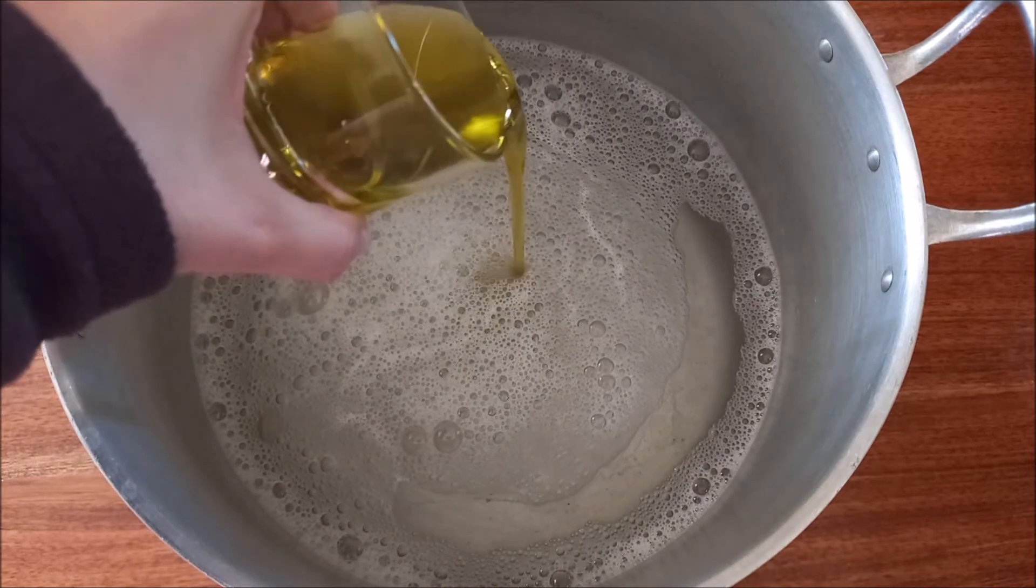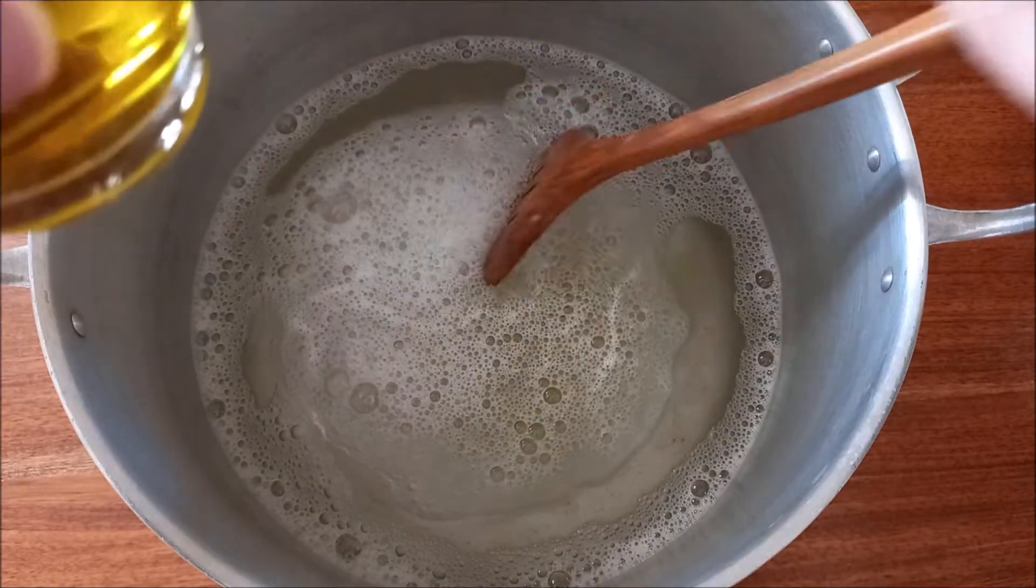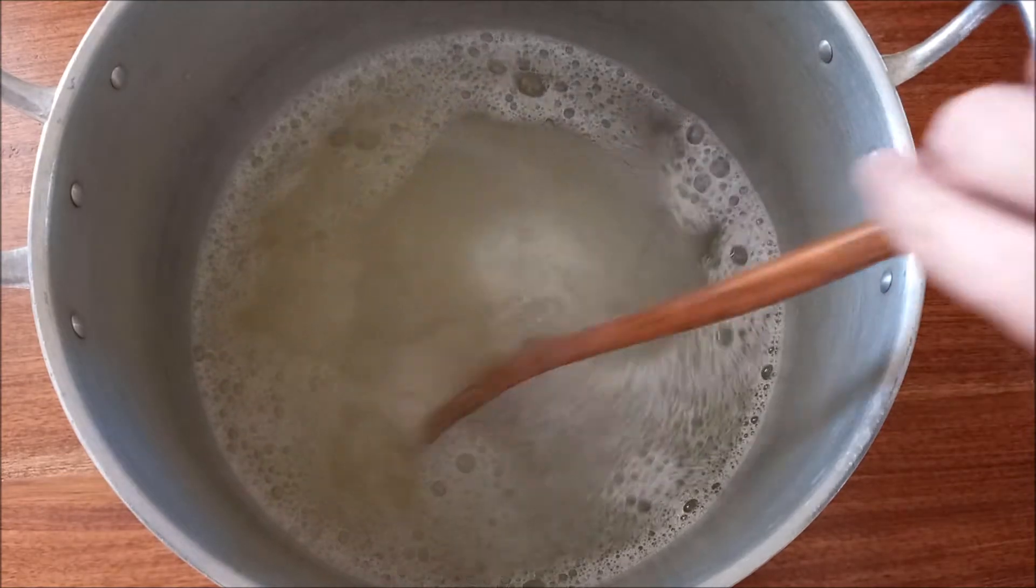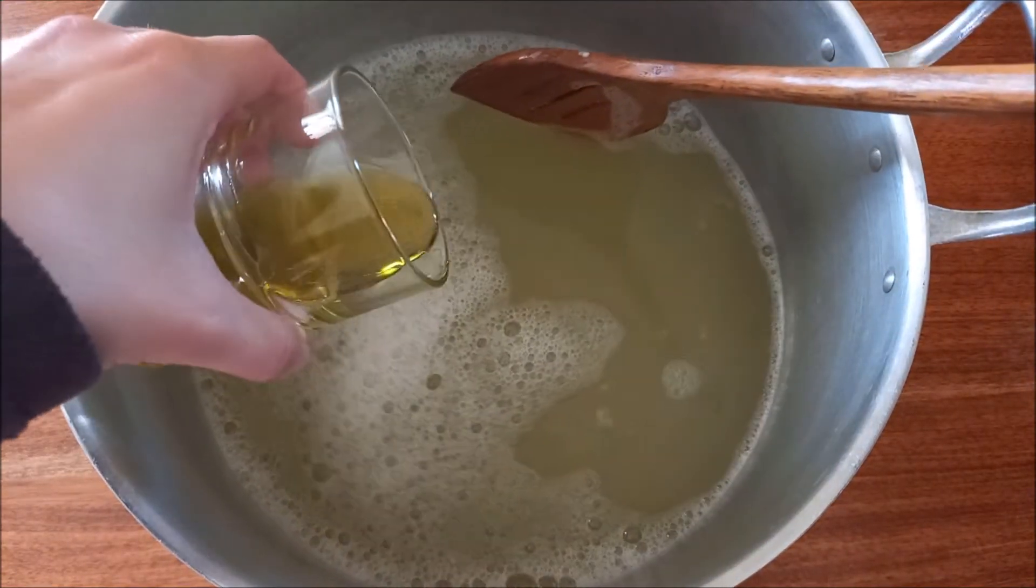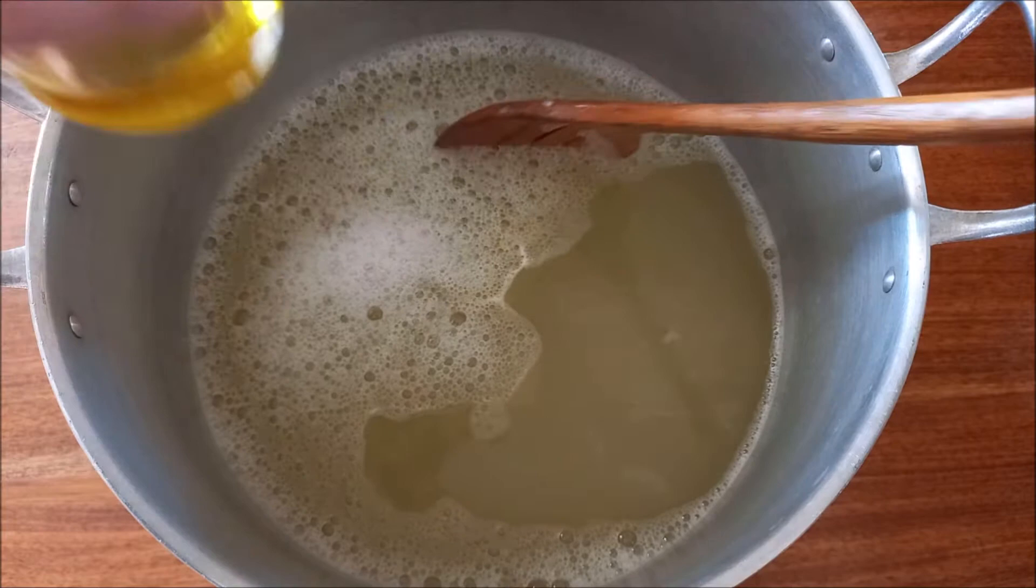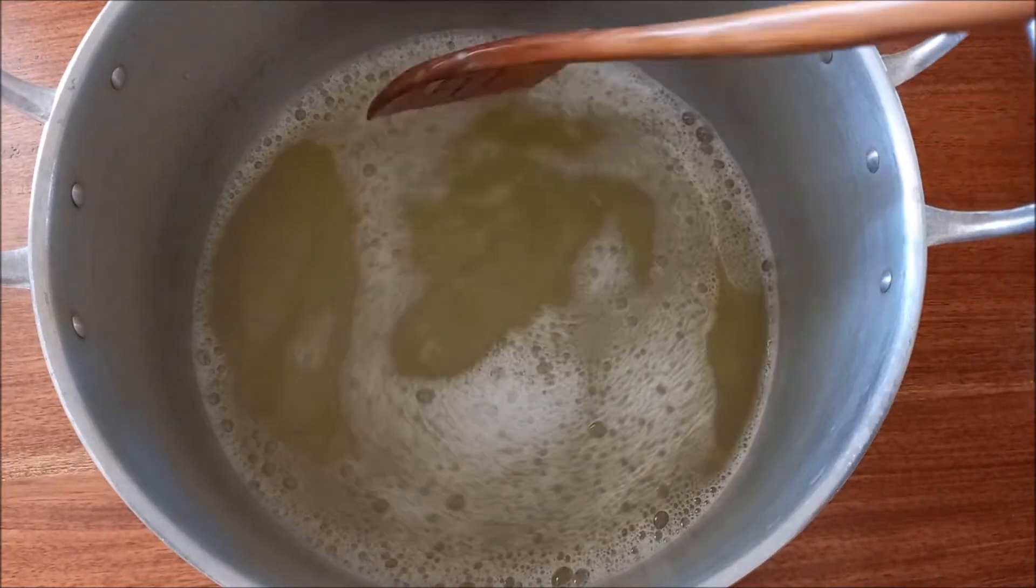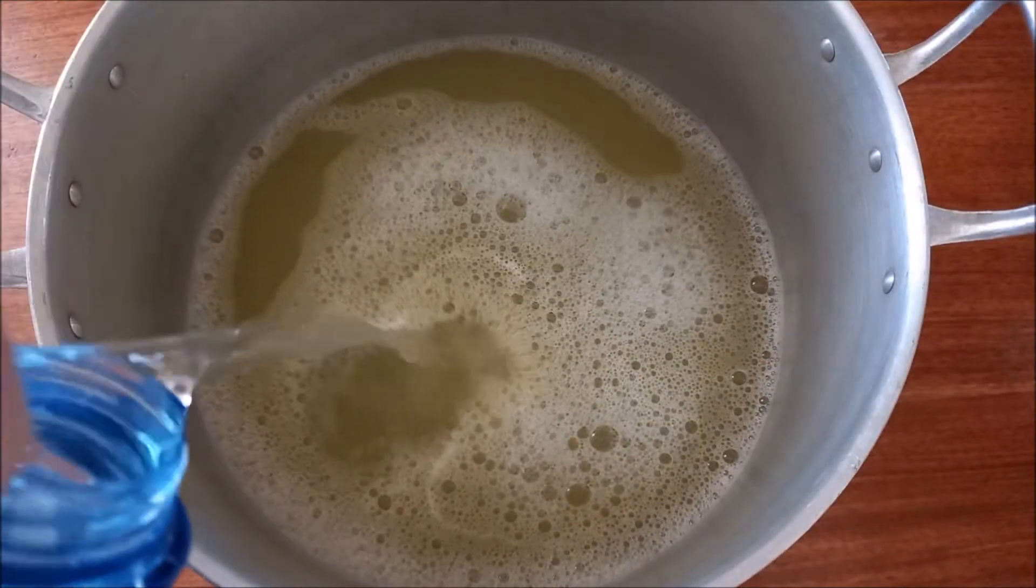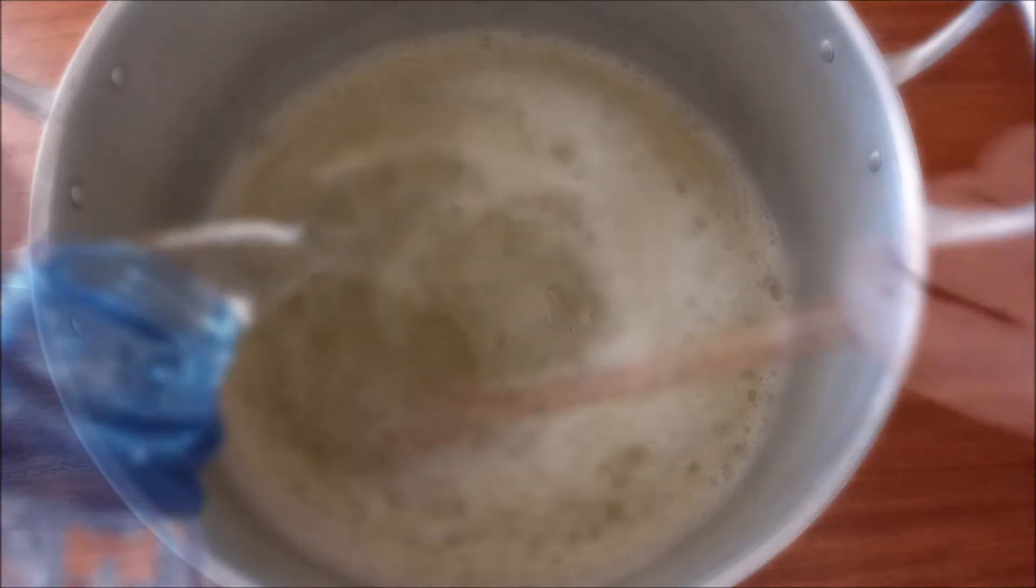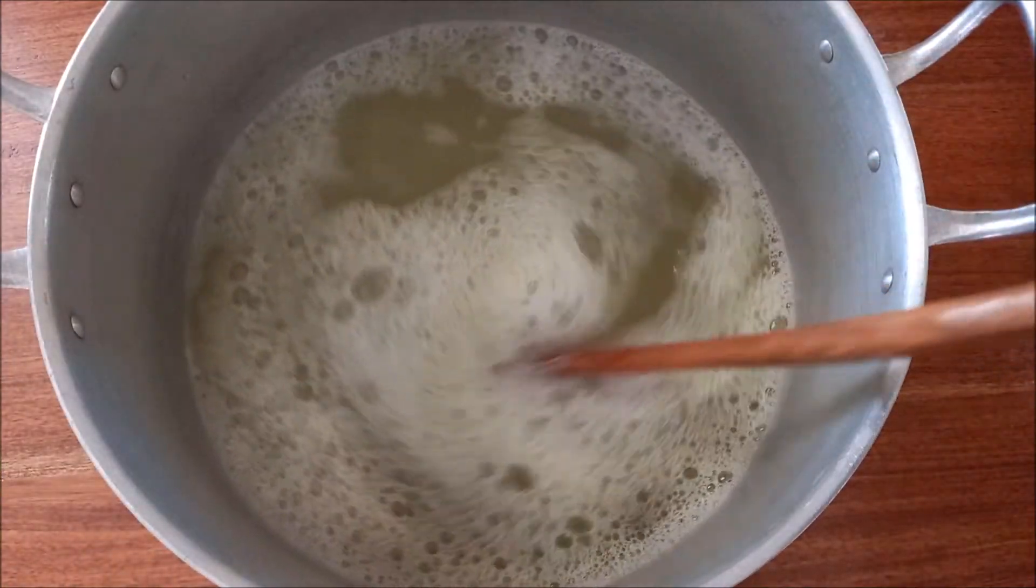Gradually add the vegetable oil, stirring constantly with a spoon. Then add, gradually, the other 5 liters of water and keep stirring.